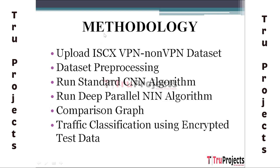Methodology: The first module is uploading the ISCX VPN and non-VPN dataset. This dataset contains network traffic data captured under various conditions including encrypted virtual private network (VPN) and non-VPN scenarios, forming the foundation for training and evaluating the classification model. The second module is data pre-processing: before data can be fed into the classification models, it must be cleaned, features extracted, and normalized.